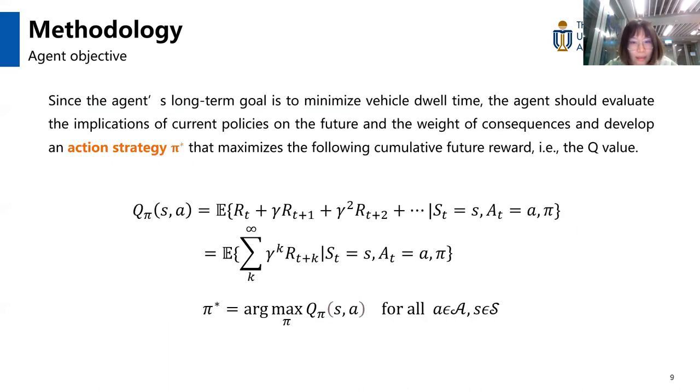Finally, the key learning process aims to maximize the reward of an agent by taking a series of actions in response to a dynamic environment. Since the agent's long-term goal is to minimize the vehicle's total waiting time, the agent should evaluate the implication of current policies on the future and weight the consequences and develop an action strategy pi. Eventually, the agent should follow some algorithm to find an optimal policy pi* giving maximum Q-value.